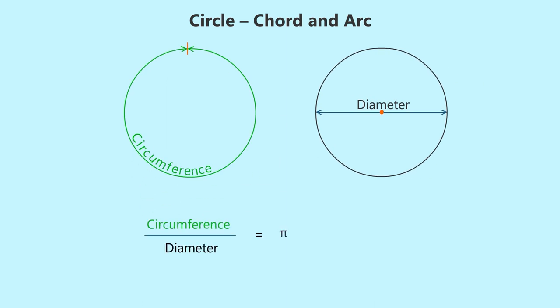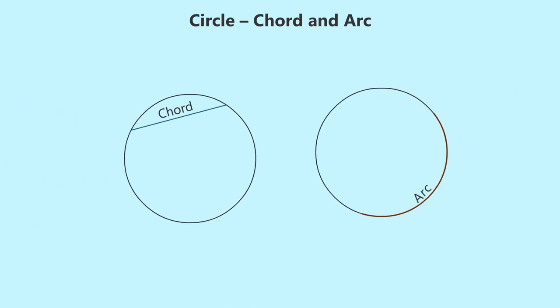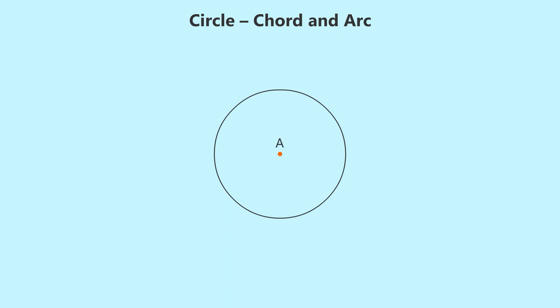Pi's value is near to 22 by 7 and 3.14. Today let us discuss a few properties of chords and arcs of a circle. Consider a circle with center A. Let PQ be a chord of the circle as shown.